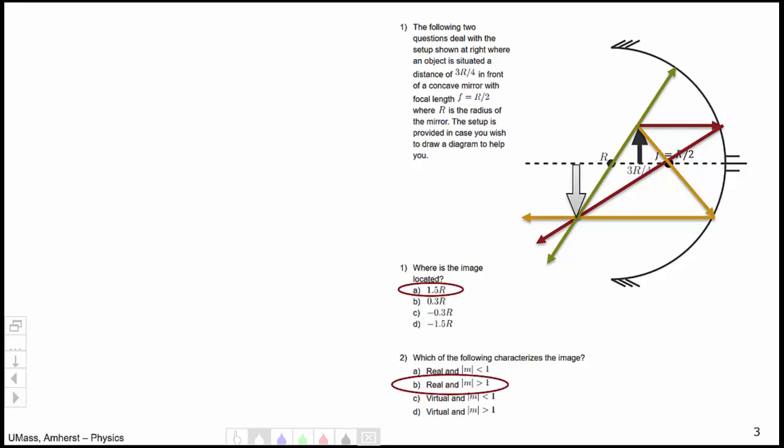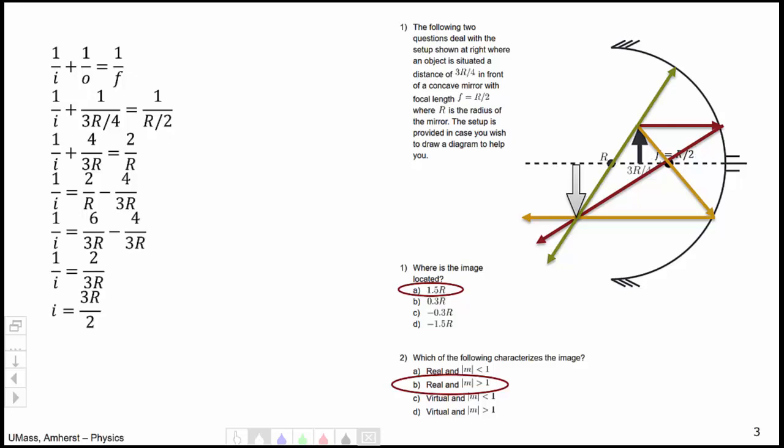Another way to solve this problem was to go through and actually solve it out mathematically. To find the image position, we would use 1 over i plus 1 over o equals 1 over f. We know that the object position o is 3r over 4. We know that the focal length is r over 2. Simplifying the fractions within fractions, then we subtract 4 over 3r to the other side of the equation, find a common denominator, do the subtraction, and then get the reciprocal, and we will see that the image distance is, in fact, positive 3r over 2, which is equivalent to what we found with our ray diagram.